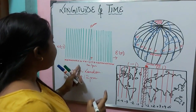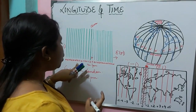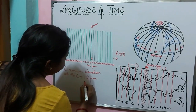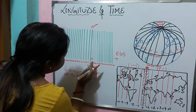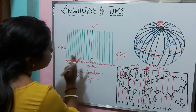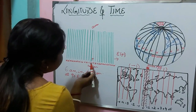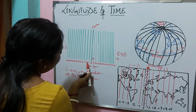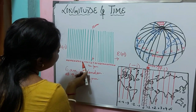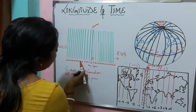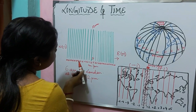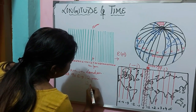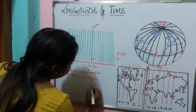What will be the time in the west at 90 degrees? Just go on subtracting: 6 am, then 5 am, 4 am, 3 am, 2 am, 1 am — so at 90 degrees west it will be 12 am midnight.